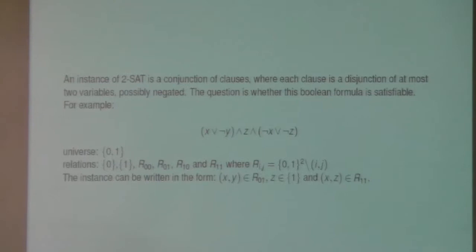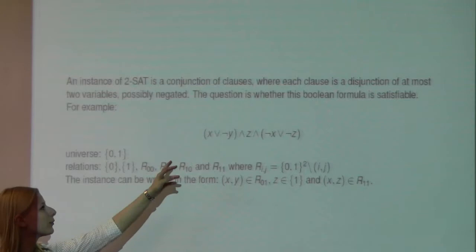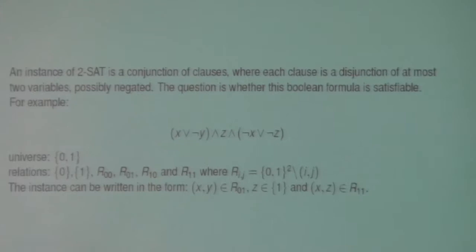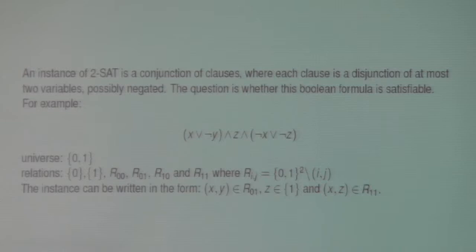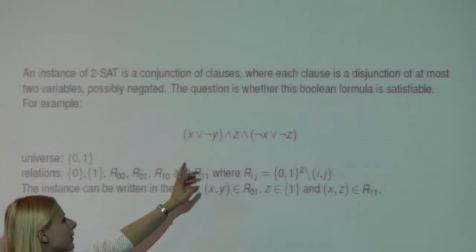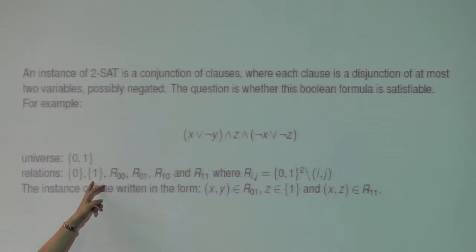Another example is the 2-SAT problem, where we have a conjunction of clauses and in every clause there are at most two variables, and most of them can be negated. The universe is 0 and 1 — like before the universe was the three colors. We can rephrase it in terms of relations. For example, if z is standing alone, the whole formula requires z to be in the 1-relation.